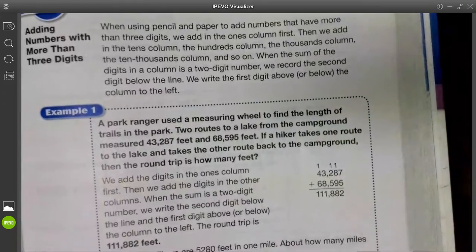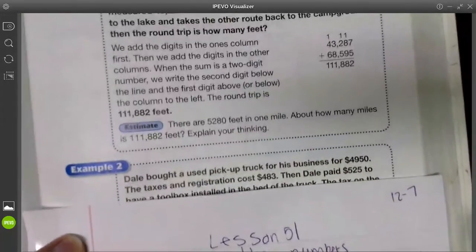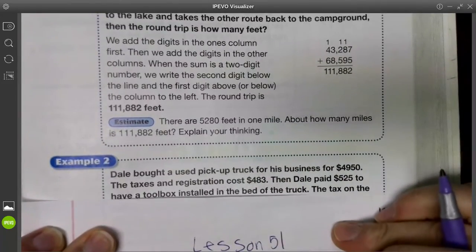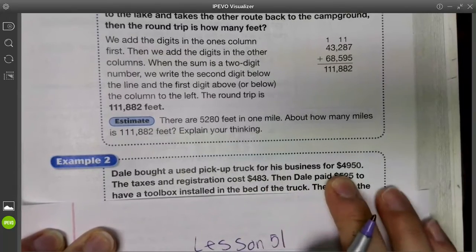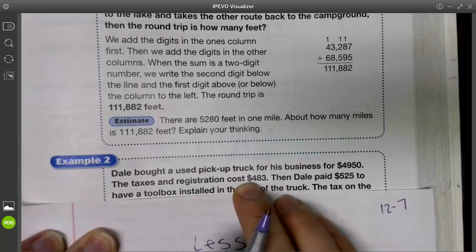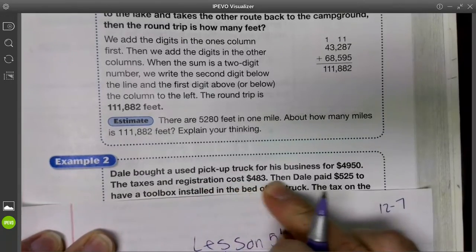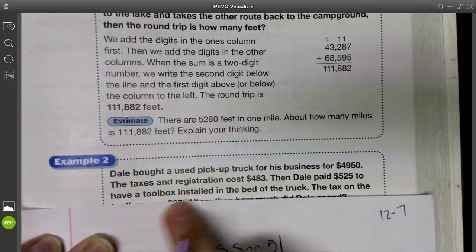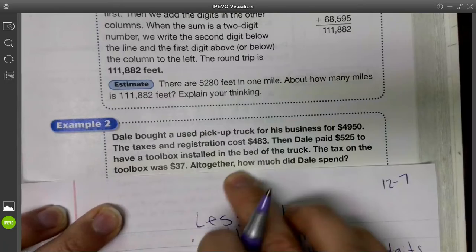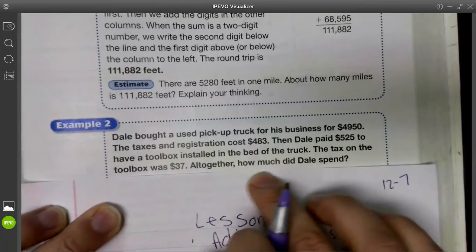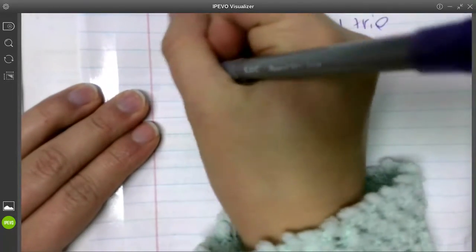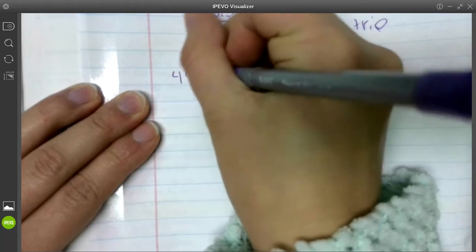Okay, now we're going to go to our next big example. Dale bought a used pickup truck for his business for $4,950. The taxes and registration cost $483. Then Dale paid $525 to have a toolbox installed on the bed of his truck. The tax on the toolbox was $37. All together is our key word that we're probably going to add. How much did Dale spend? We got a lot of numbers to write down here, so it started at $4,950. I'm going to put my dollar sign there.